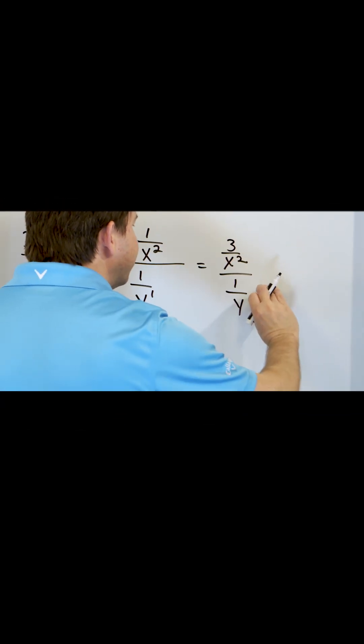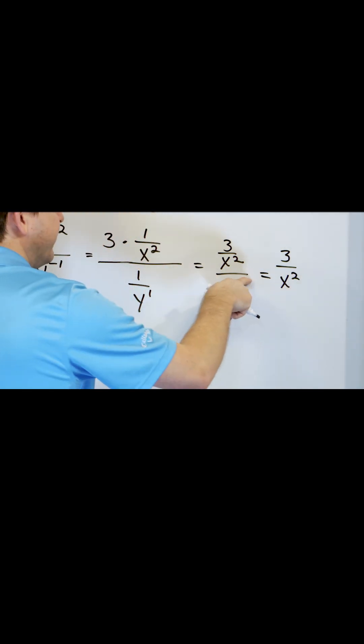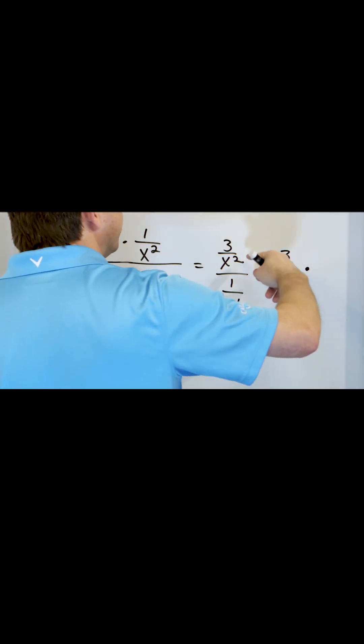But then you have a fraction divided by a fraction, we know how to handle that. You take the top fraction, change this division here to multiplication, take the bottom fraction, flip it over,